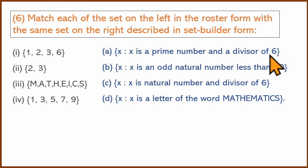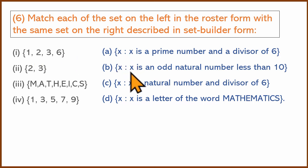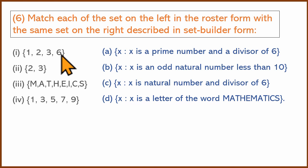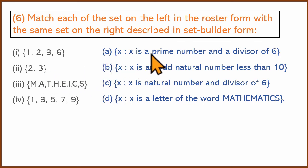Matching question: X is a prime number and divisor of 6. 1 is not a prime number. The prime divisors of 6 are 2 and 3, so the answer is {2, 3}. X is an odd natural number less than 10: that gives {1, 3, 5, 7, 9}.